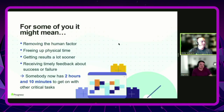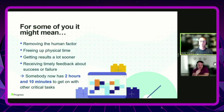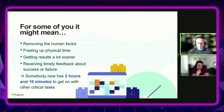Removing the human factor, freeing up physical time, getting results sooner, and timely feedback — these are part of the cultural change. One thing I love about automation is that tests run overnight. When I wake up and check email, I can see how many tests passed and how many failed before I even get out of bed. The tester is no longer starting their day by manually logging in and running the whole application from scratch — they're responding to what's already broken. You already have the answer.